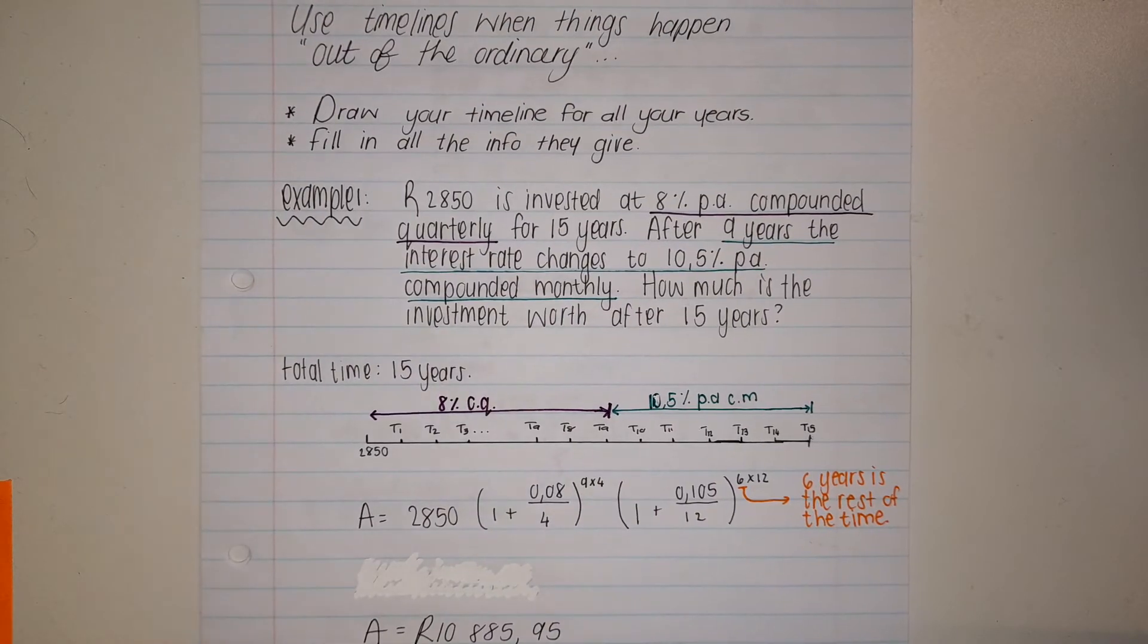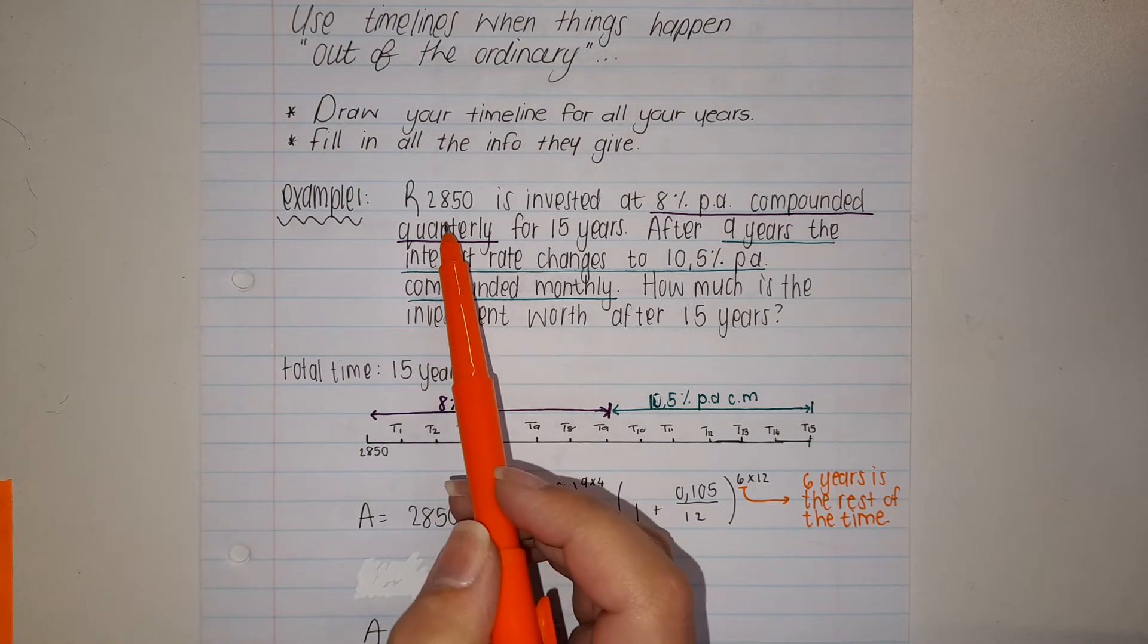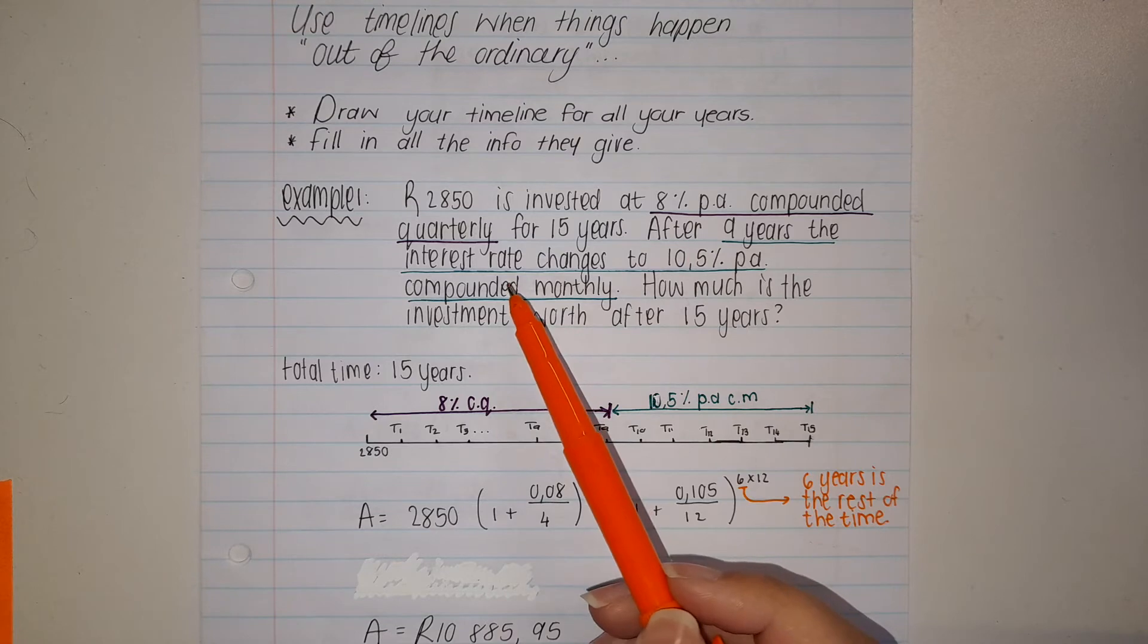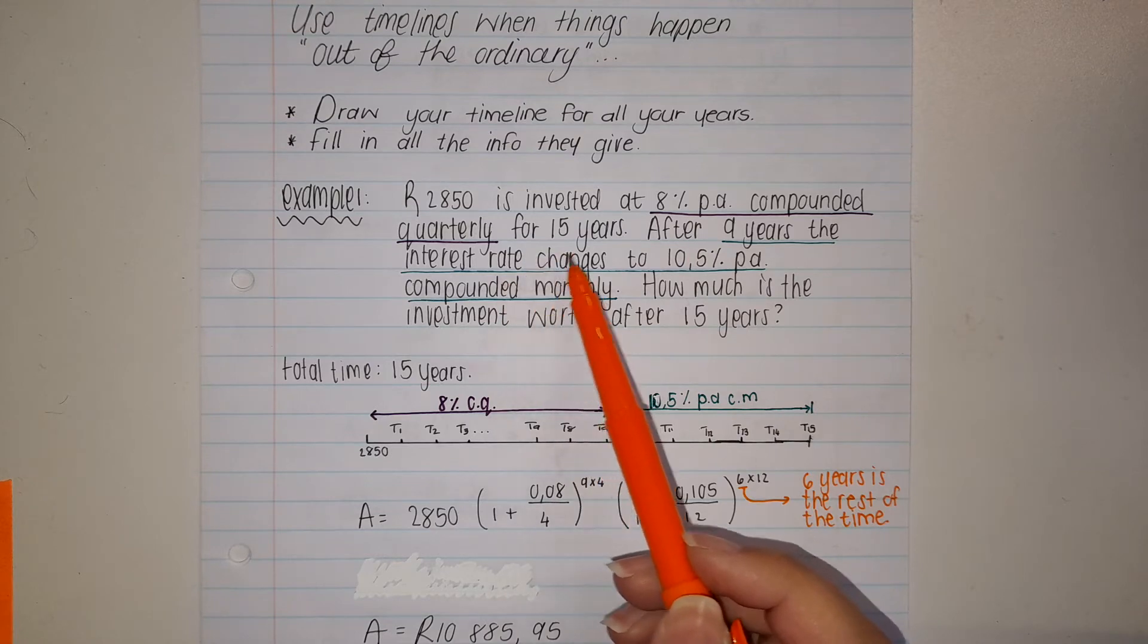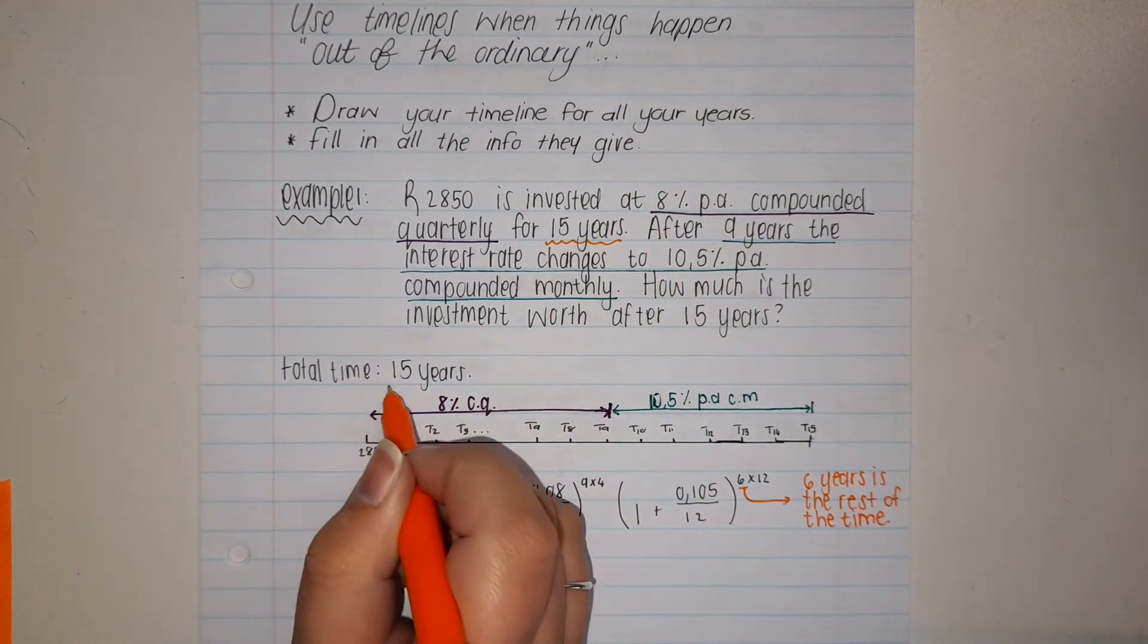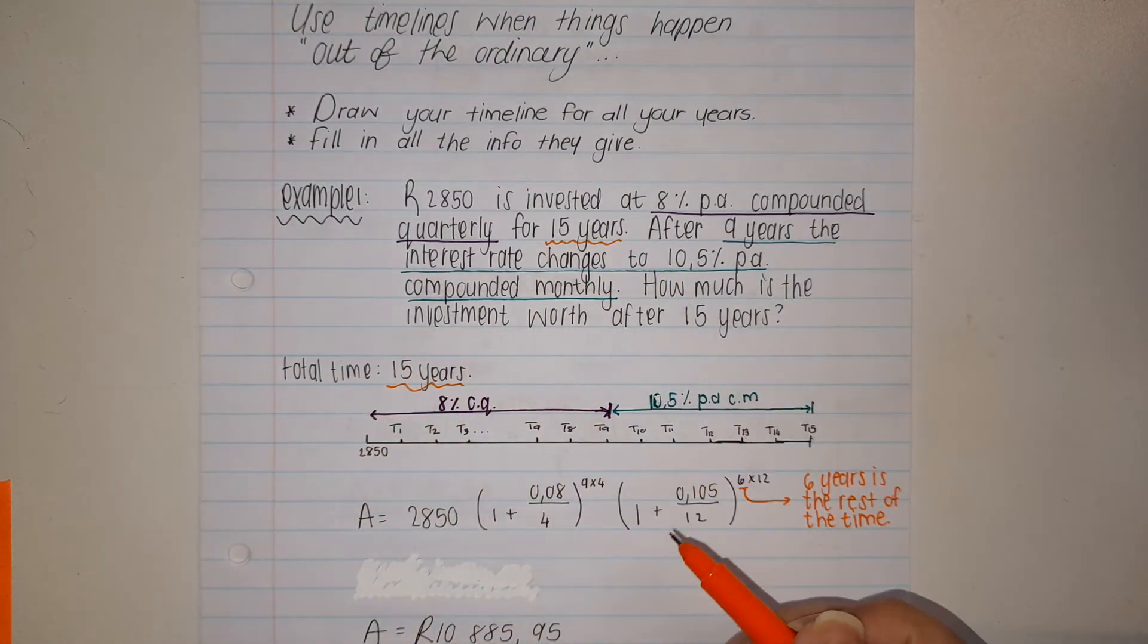In example one, 2850 rand is invested at 8% per annum compounded quarterly for 15 years. After 9 years the interest rate changes to 10.5% per annum compounded monthly.